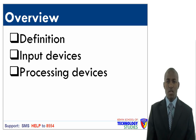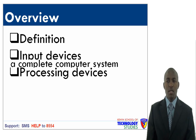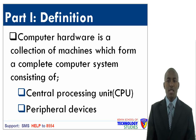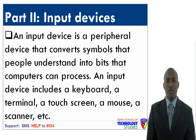By the end of this lesson, you are supposed to have covered the following: the definition of computer hardware, input devices, and peripheral and processing devices. Computer hardware is a collection of machines which form a complete computer system, consisting of a central processing unit and peripheral devices.